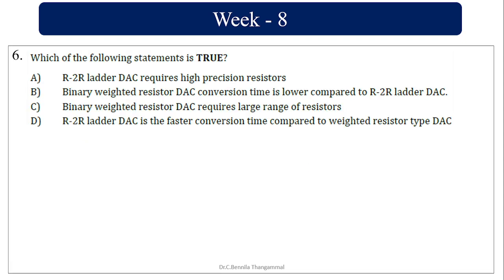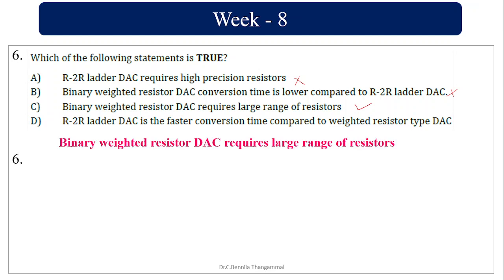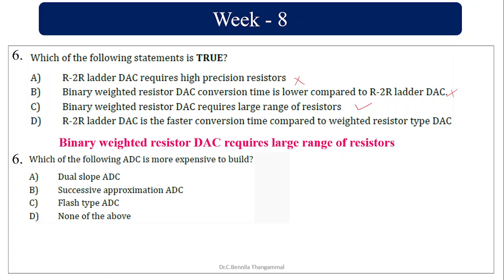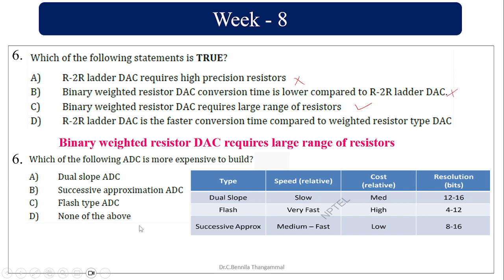Which of the following statements is true? The R-2R ladder circuit requires less precision resistors — that is false. Binary weighted resistor conversion time is lower compared to R-2R ladder — that is also false because it is actually higher. Binary weighted resistor DAC requires a large range of resistors — this is the correct one. Flash ADC is more expensive to build — also true, as high cost is associated with flash type.